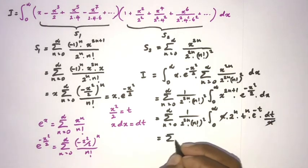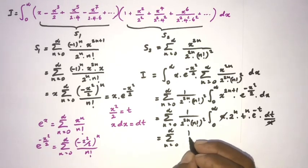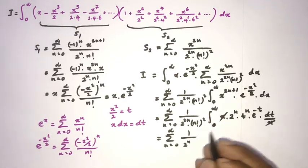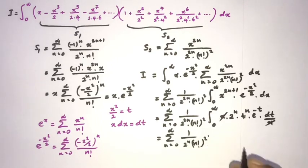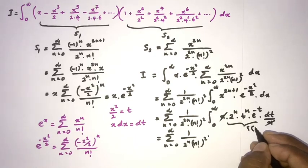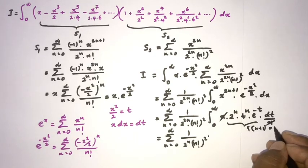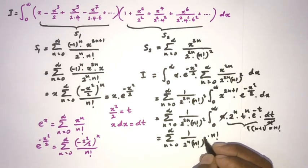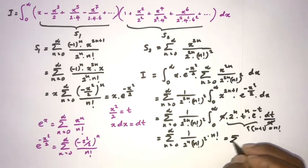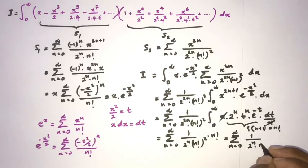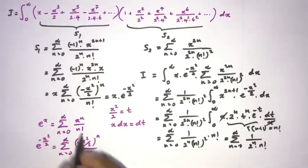After the 2^n cancellation we have the sum from n=0 to infinity of 1 over 2^n times (n!)², times the gamma function integral giving Gamma(n+1). Since Gamma(n+1) = n!, the (n!)² cancels with n!, leaving the sum from 0 to infinity of 1 over 2^n times n factorial.